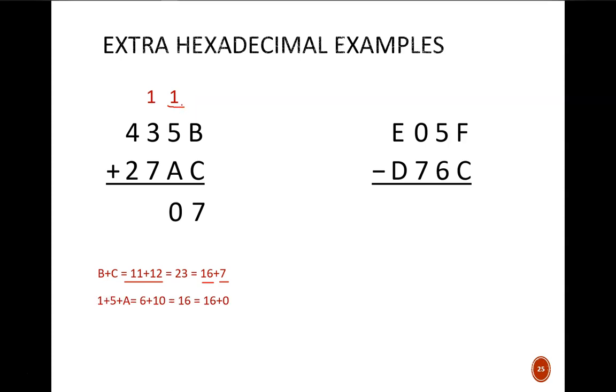Next column is 1 plus 5 plus 10 or 16. This means a carry of 1 with a sum of 0. Next column is 1 plus 3 plus 7 which equals 11 in decimal or B in hexadecimal. Finally 4 plus 2 yields 6.